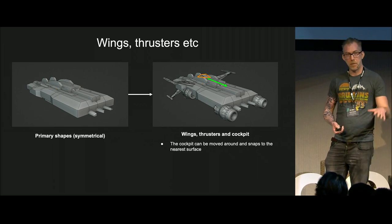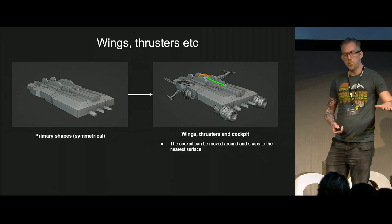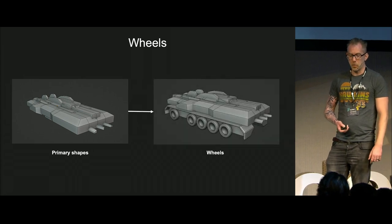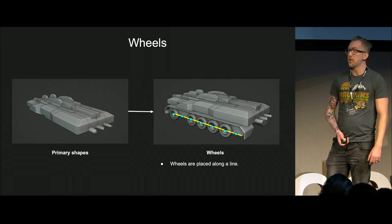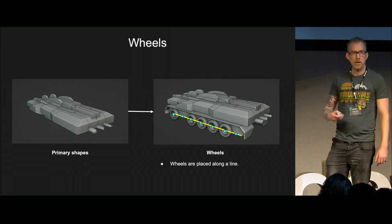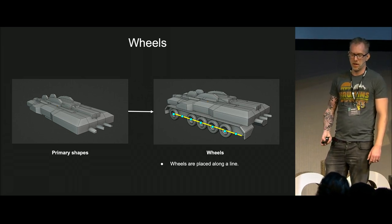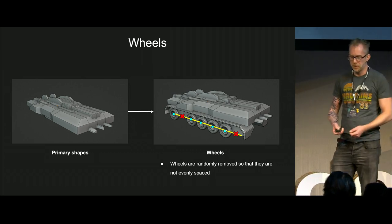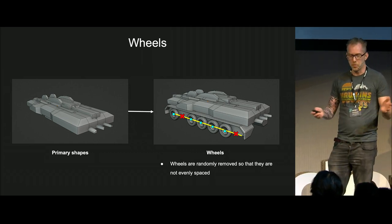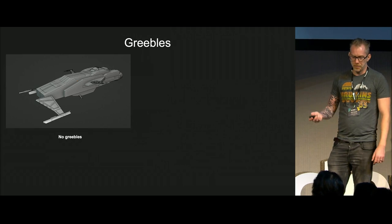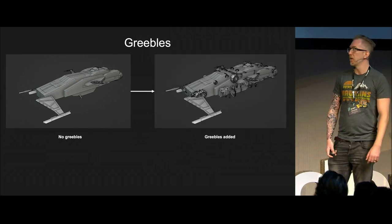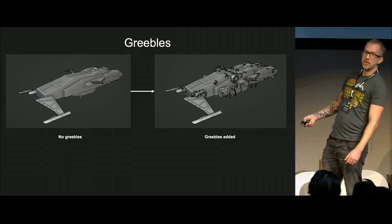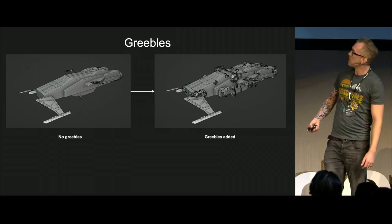The cockpit is snapping to the surface and can be moved around. Then I can also add wheels. This is basically just a mesh line, and the wheels are instanced on the points. I randomly remove some points to get visual interest, so everything is not super even. Greebles — cool sci-fi stuff. Makes stuff look more interesting than it really is. Basic rubbish shapes.